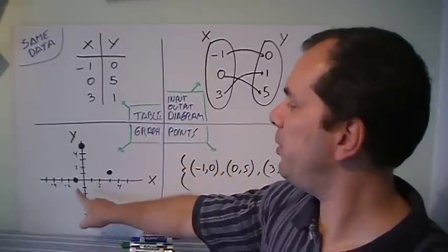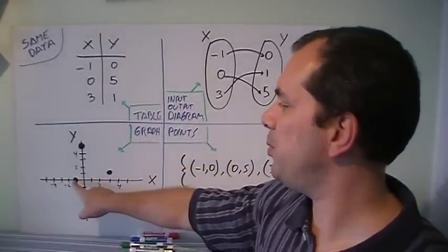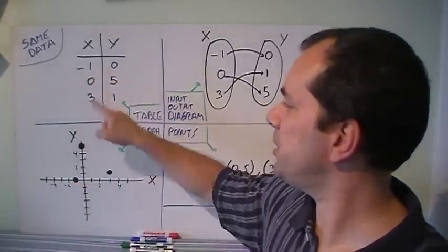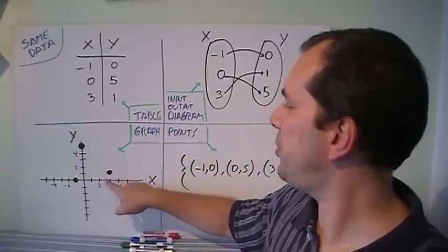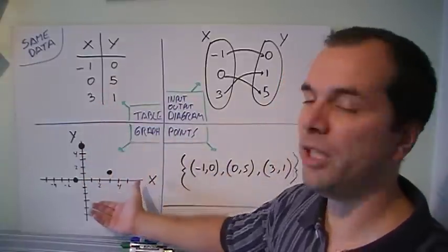A graph, well, I'll put the point. What is that point? That point is minus 1 and 0. That point is 0 and 5. And this point is 3 and 1. So it's given the same information.